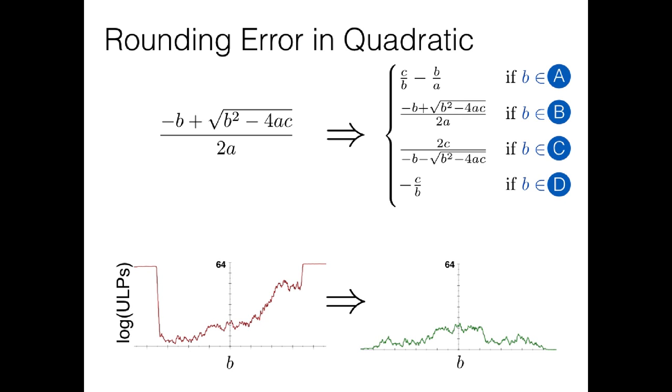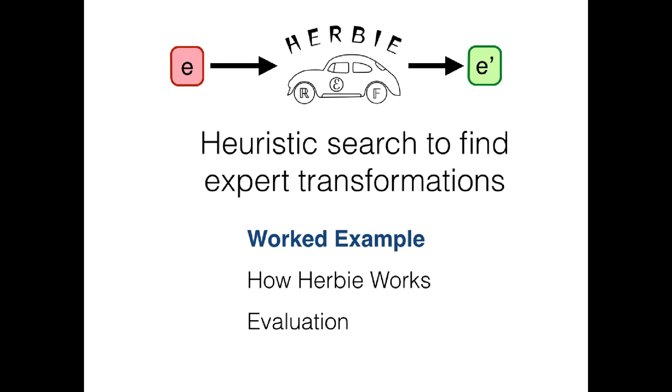And this is the task that Herbie seeks to automate, going from the simple real number formulas, like those that you see on the left, to the complicated but accurate floating point formulas that you want to use on your computer. So, how does it work?